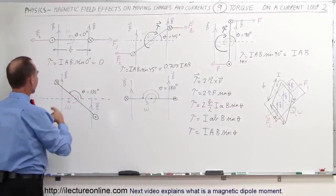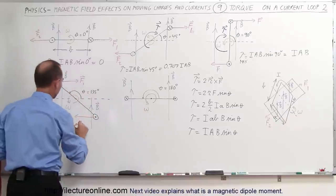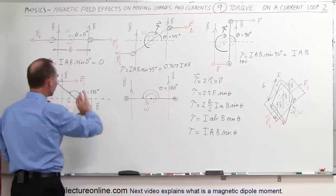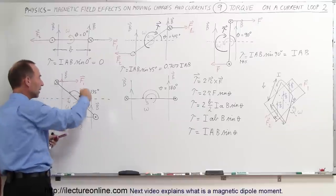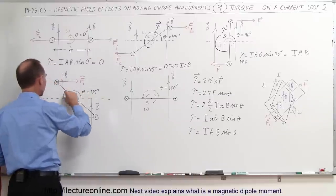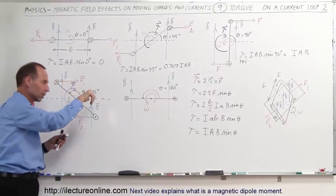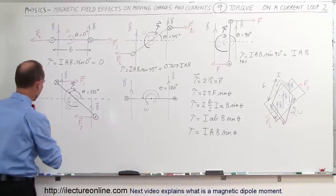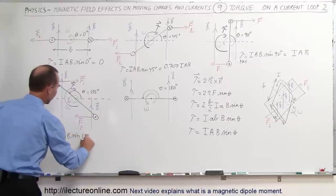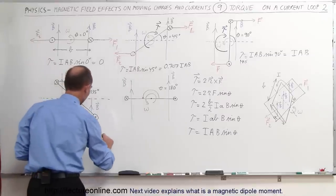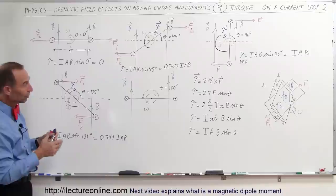At 135 degrees, F1 is in this direction and F2 in this direction. The torque still tries to rotate the loop in the same direction even though the loop is rotating the other way — the torque is in the opposite direction to the rotation. The magnitude of the torque is I·A·B times sine of 135 degrees, which is 0.707, so torque = 0.707·I·A·B.